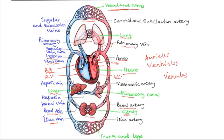From the right atrium, the blood is pumped into the right ventricle, which then pumps blood out through the pulmonary artery to the lungs for oxygenation.